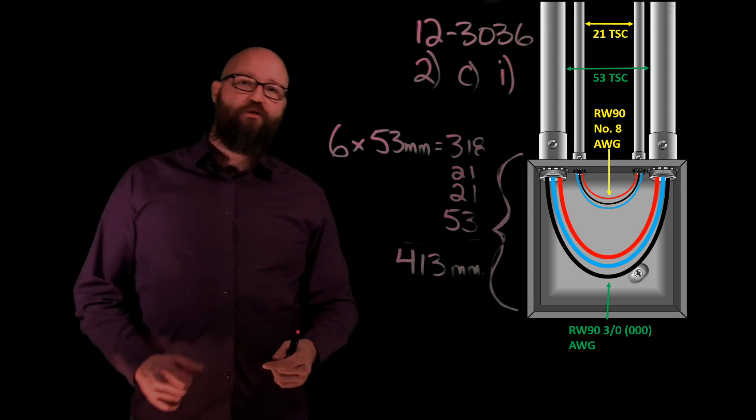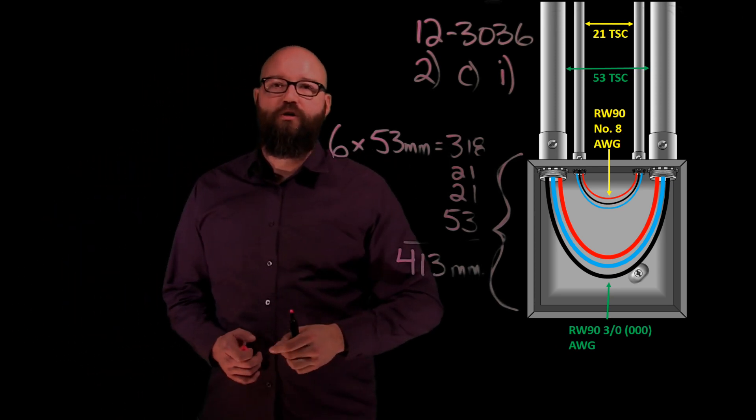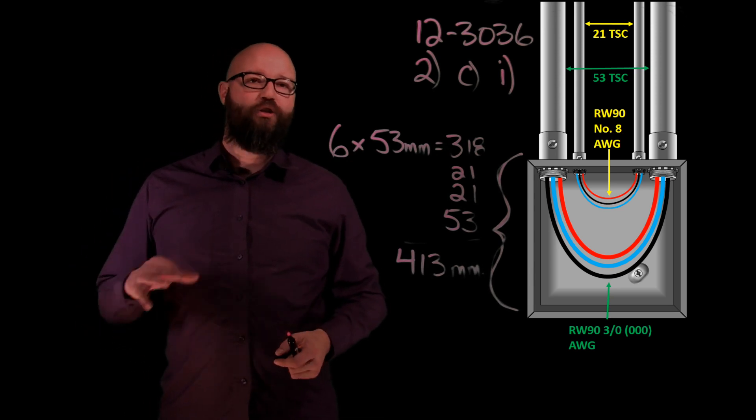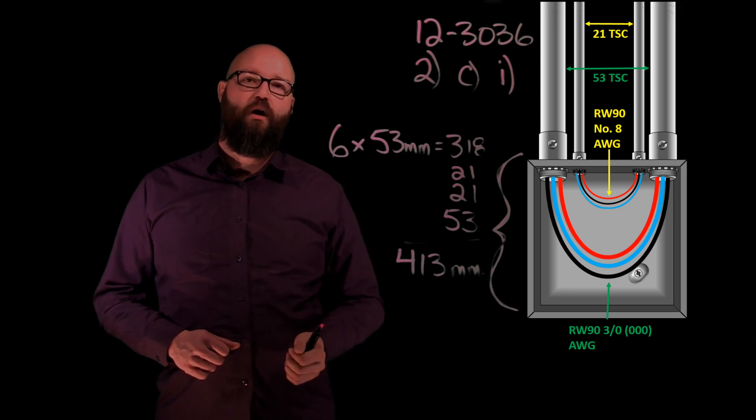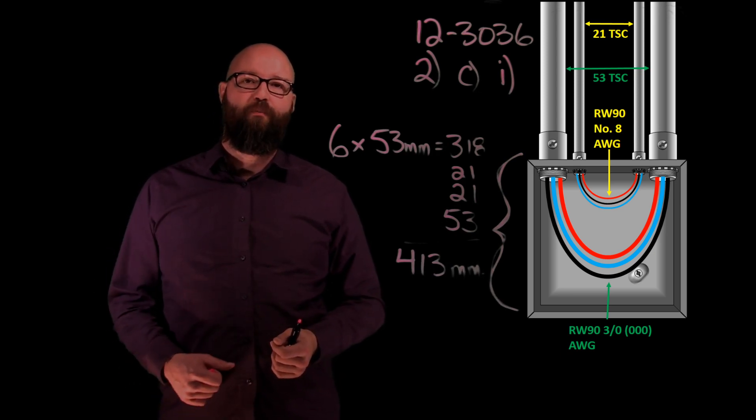There's one more thing that we need to observe when we're doing this U-pull junction box and that's the distance that's actually in between my conduits. Again, we're not concerned with the 21 trade size conduits because those have smaller than a number 4.